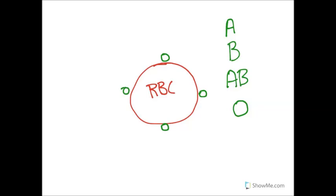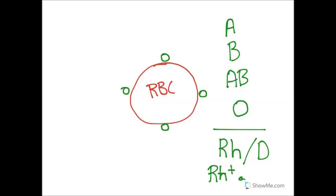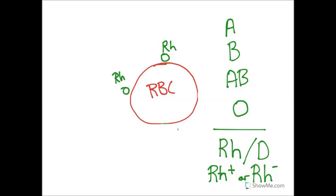Another important antigen is the Rh antigen, particularly the D antigen, which comes in two varieties: Rh positive or Rh negative. If you're Rh positive, you possess Rh antigens on your cell surface. If you are Rh negative, those antigens are not present on your red blood cells.